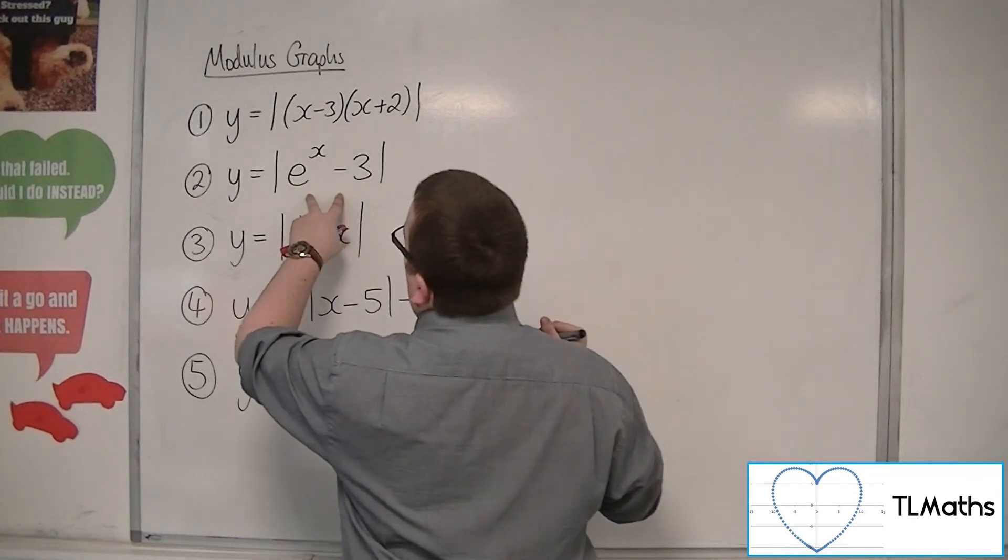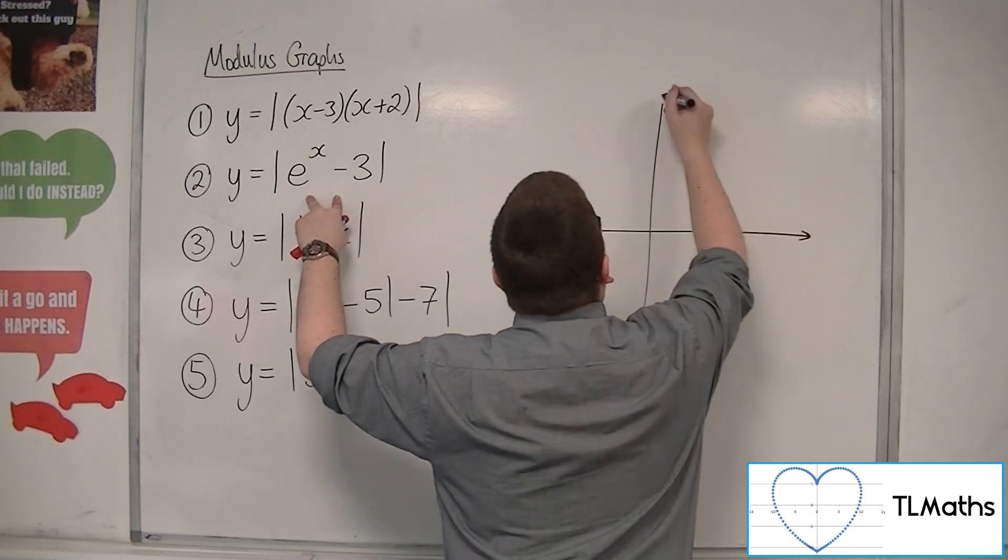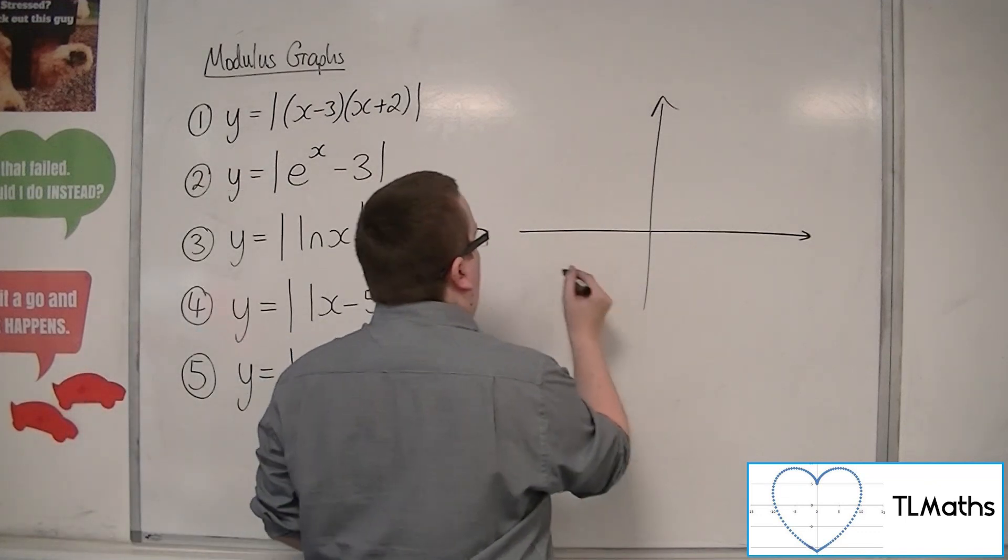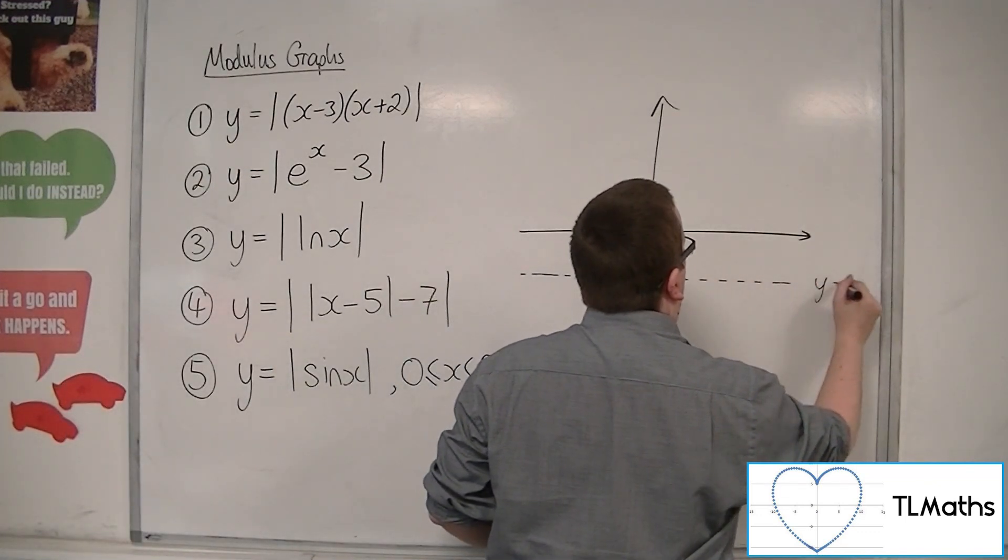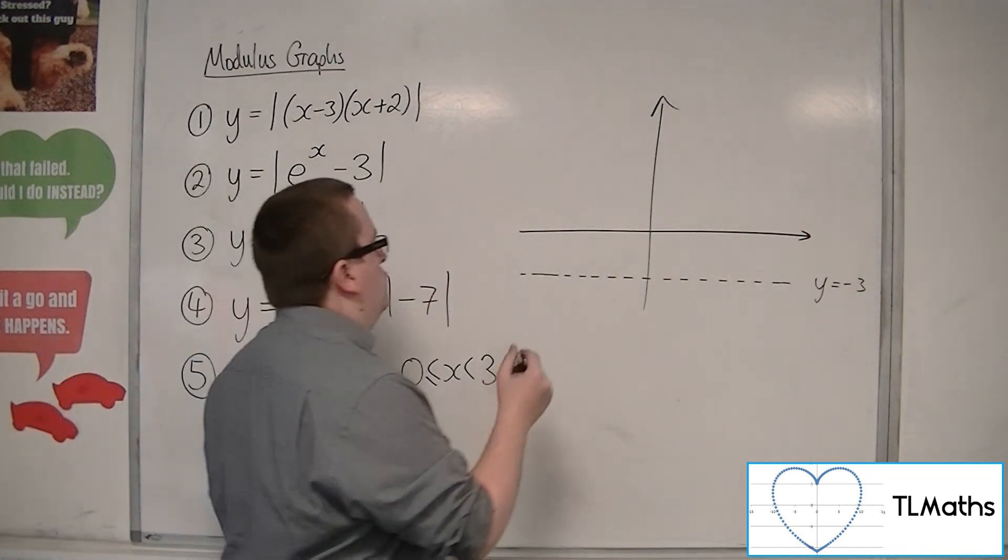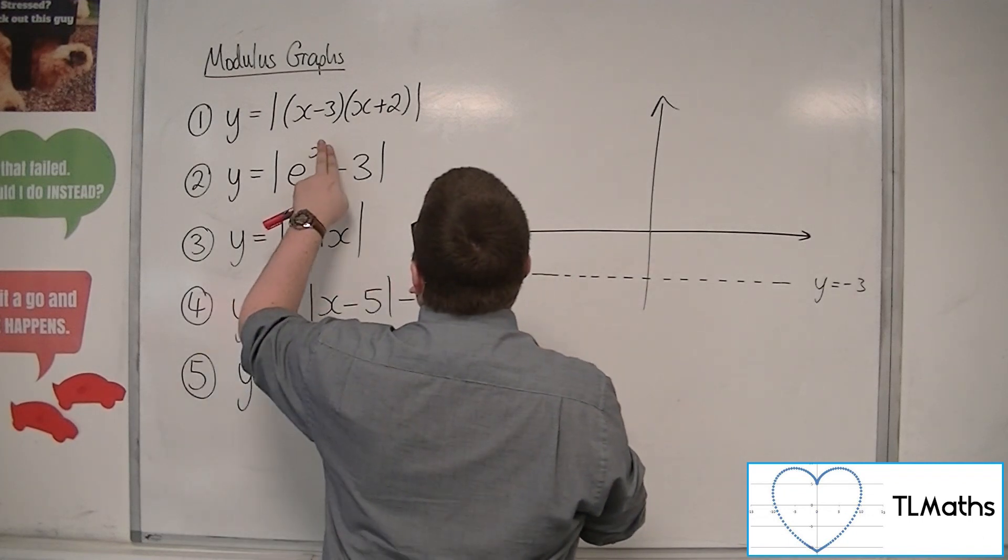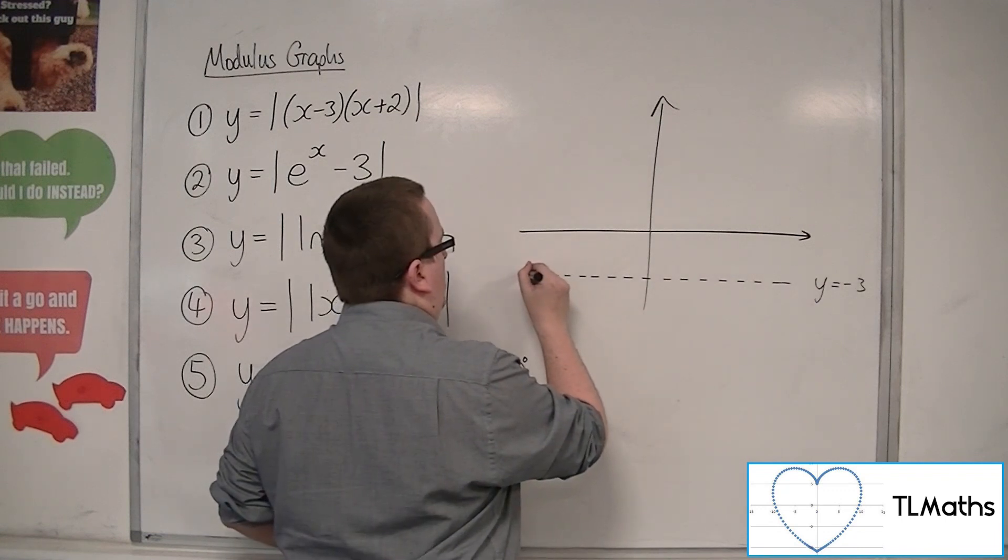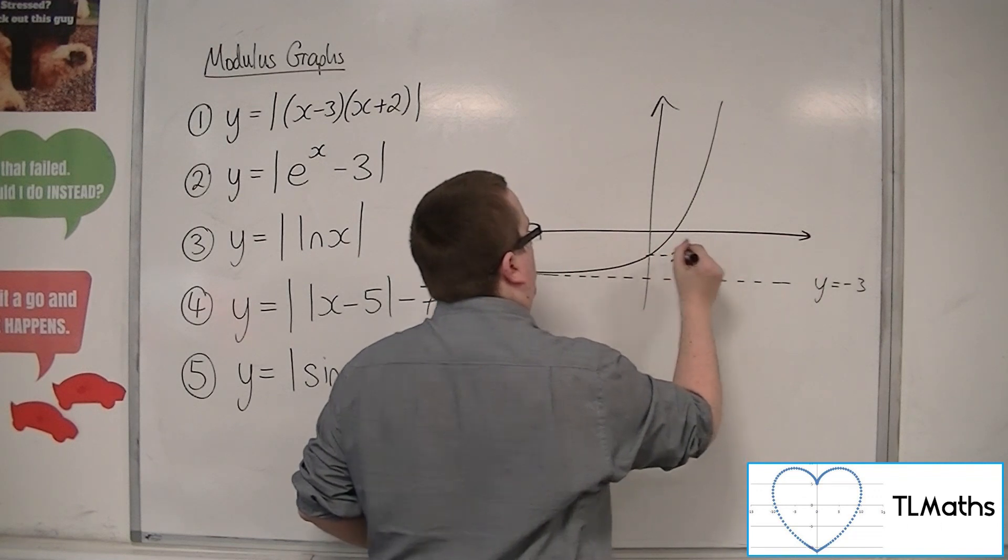So y equals e to the x minus 3 modded. Now this has a horizontal asymptote, y equals minus 3. So the graph would have looked, well, when x is 0 I get 2, or minus 2. So it would be a graph that looks something like this. So that would be at minus 2.